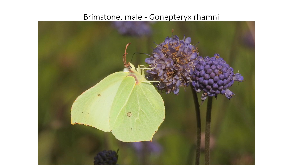There's a male brimstone — Gonepteryx rhamni — Gonepteryx meaning angle wing. You can see it's got quite a sharp angle on the edge, which you don't see in the clouded yellow. This butterfly could fly throughout the year; it's one of the first butterflies to fly in spring. It overwinters, as do four other British butterflies. The male has a bright yellow underwing.